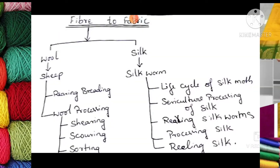For silkworm, there are several steps. We are going to study about the life cycle of the silk moth, which is the basic source of silk fabric. The process is known as sericulture, where we process the silk — rearing silkworms, processing silk, and reeling silk.